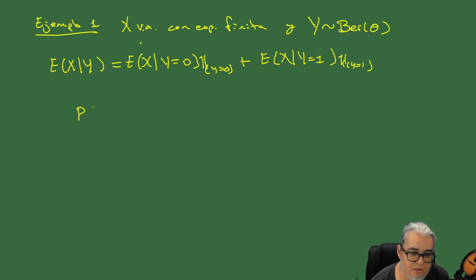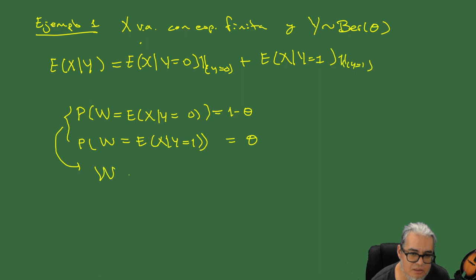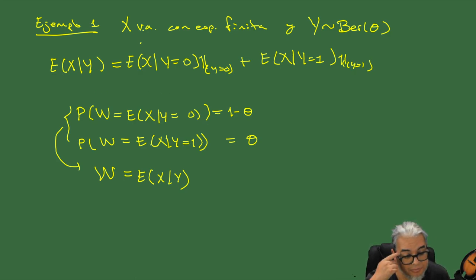La probabilidad de que W sea la condicional cuando Y es igual a 0 es 1 menos teta, y la probabilidad de que W sea igual a E[X dado Y igual a 1] es teta. Esto es la función de distribución de W igual a E[X dado Y]. Entonces la esperanza condicional es una variable aleatoria W que tiene esta distribución.